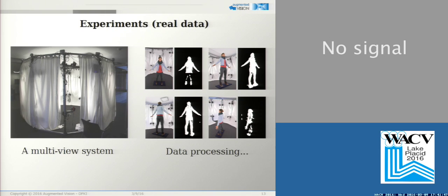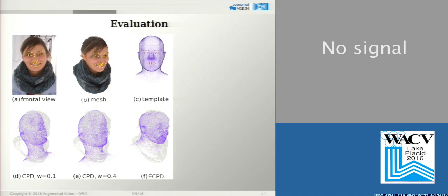In experiments on real data, we register scans of human heads obtained from a multi-view system with a predefined human head template. For correspondence establishment, we firstly extract facial landmarks on the frontal view. And then having the facial landmarks, we project them onto the point cloud. The corresponding points on the template are known in advance. Afterwards, we register point clouds with the CPD and ECPD. The result can be seen in the bottom row. And in the case of the ECPD, the mean cloud-to-cloud distance in the region of interest, in our case the facial area, is minimal.